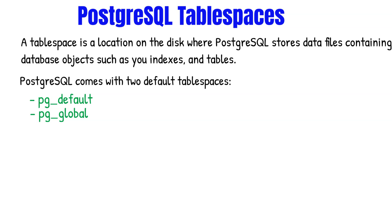The pg_global tablespace is used for shared system catalogs. The pg_default tablespace is the default tablespace for the template1 and template0 databases. So when you're creating a database, if you don't change the template database or specify the tablespace location, the default tablespace will be the pg_default tablespace.